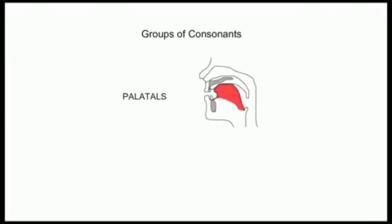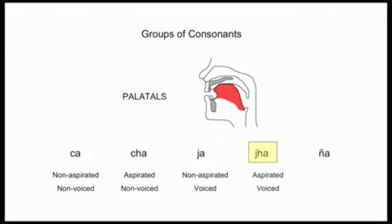The next group are called palatals. The tongue seals the air behind it by lying along the roof of the mouth and that seal is broken by a vowel. The palatals are pronounced. jh, jh, nha.